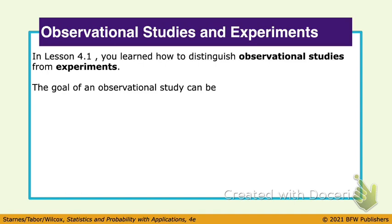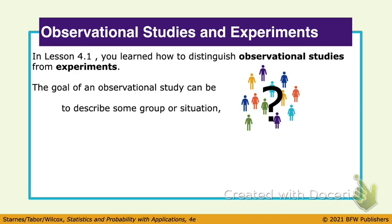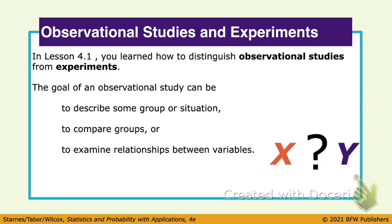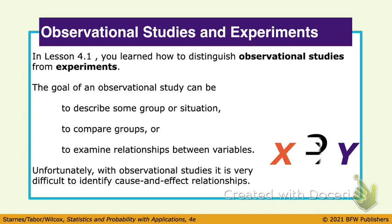An experiment has a treatment imposed. An observational study, you're just watching to see and collecting data. The goal of an observational study might be to collect some data about a group, compare groups, or examine the relationship between an x and a y variable, trying to see if there's some sort of correlation. But the problem with observational studies is they do not allow cause and effect to be determined. Correlation does not imply causation — we've talked about that before, so we have to be careful.